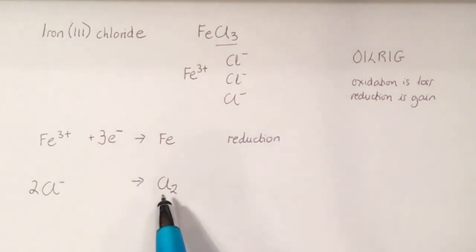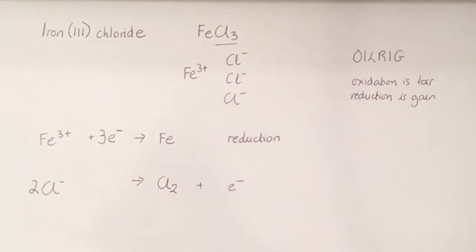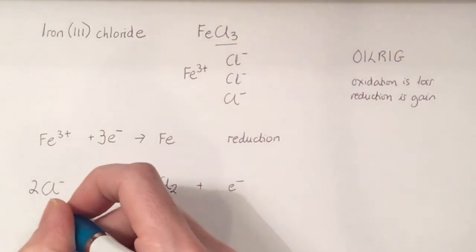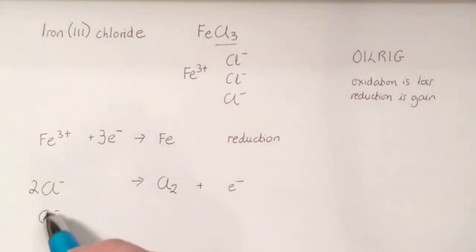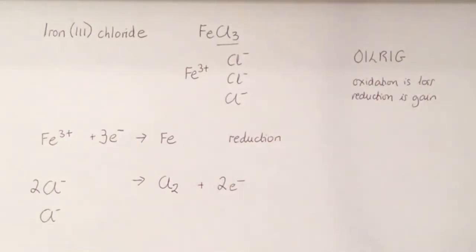Now if we look at the charges, here we're going from a negative charge to no charge. So we're becoming more positive. And that means going from the ion to the atom, we must have lost electrons. Each of our chlorides has one electron. We have two of them, so we must have lost two electrons.